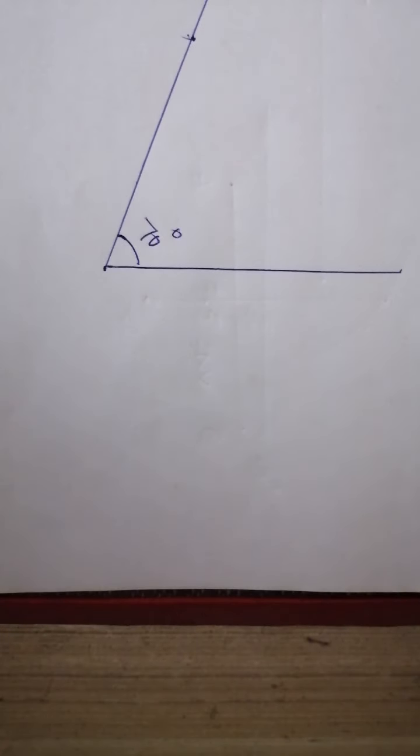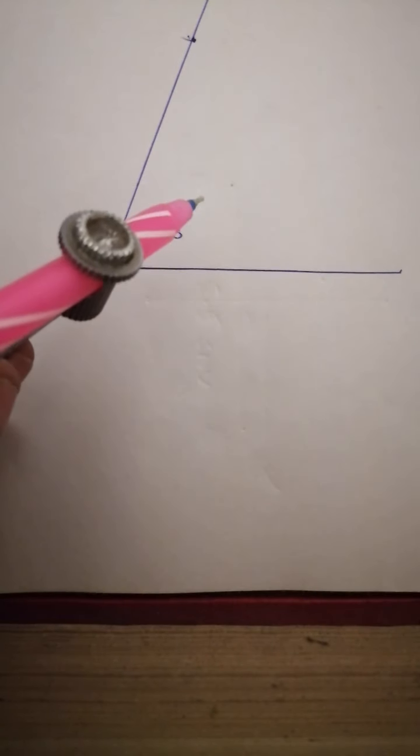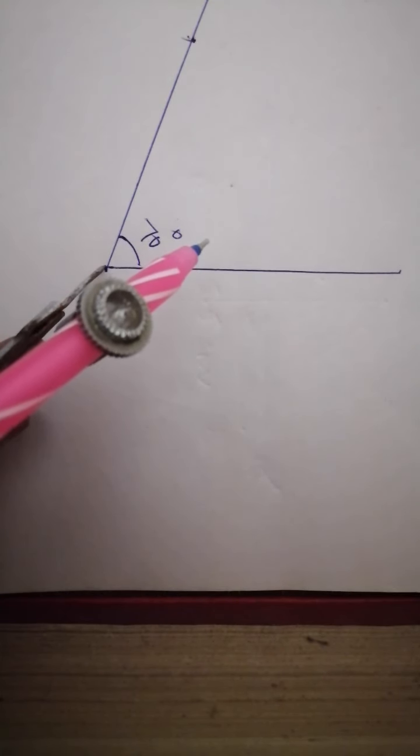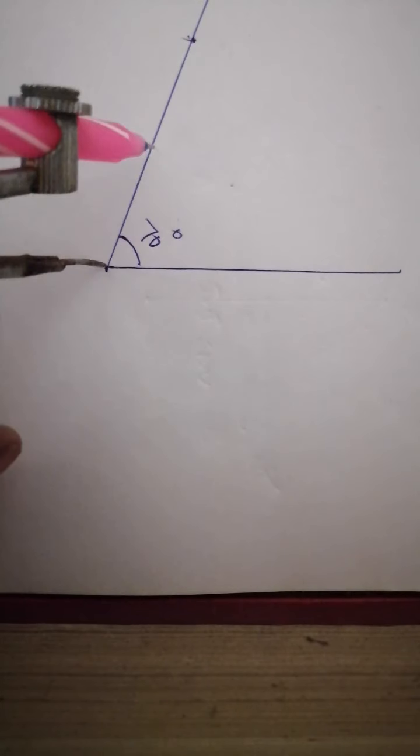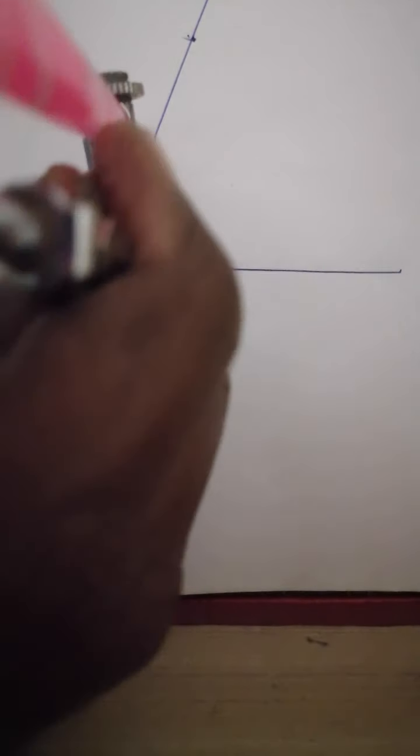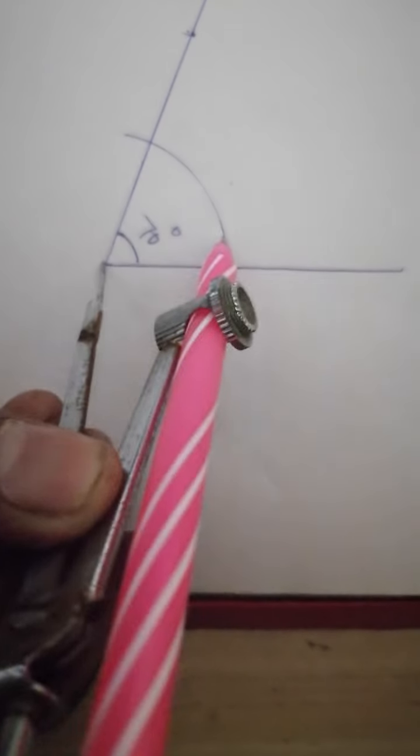Then, using the compass, keep the compass at this vertex. Take a small radius in your compass. That means, likewise perpendicular bisector, we took more than half. That is not needed here. Just take a small radius in the compass.